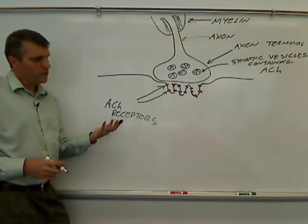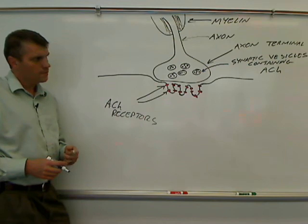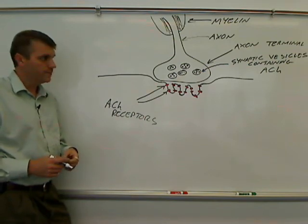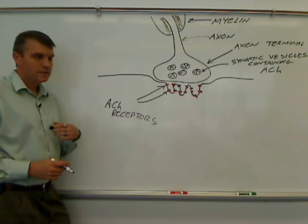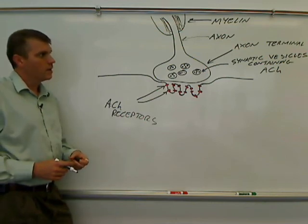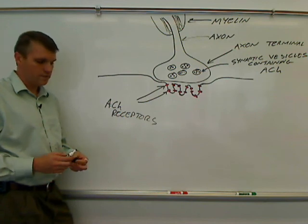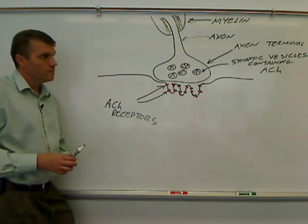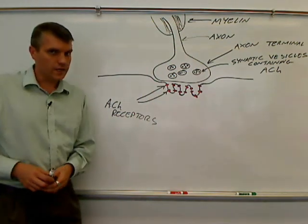And those are all of the major parts of the neuromuscular junction. Now we can move on to really starting to understand how the muscle cell is going to be stimulated by the neuron. So look for the next video.